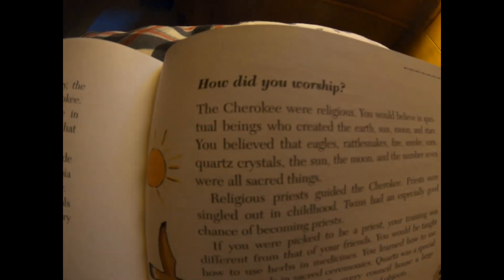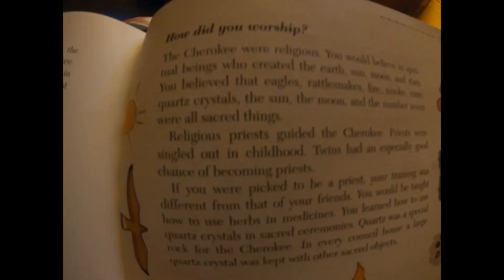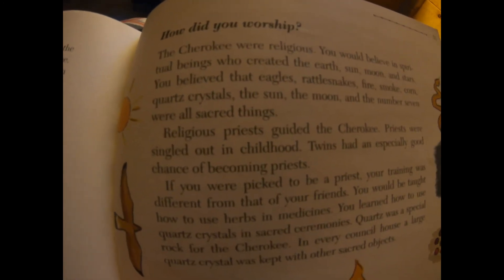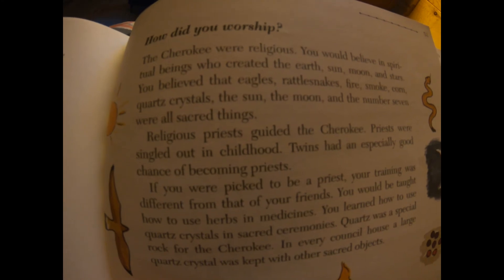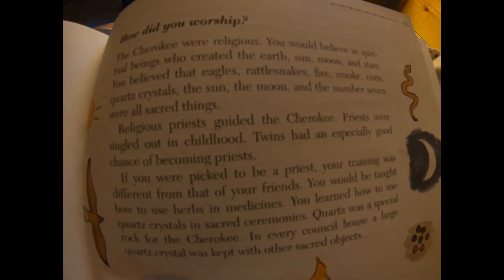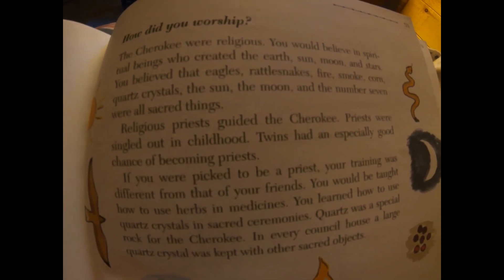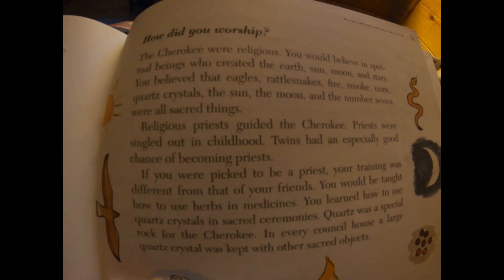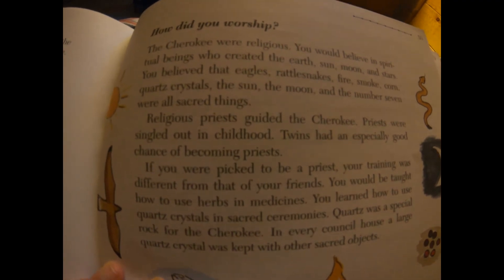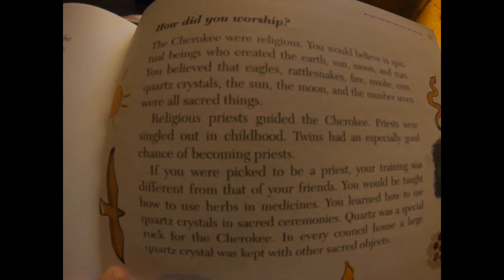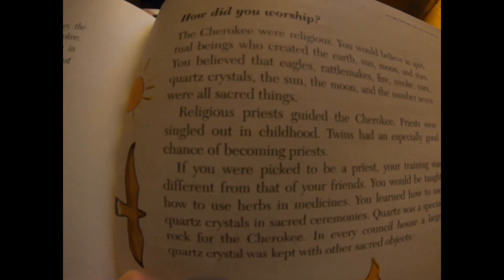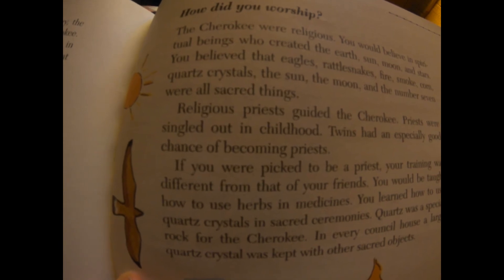How did you worship if you were a Cherokee? The Cherokee were religious. You would believe in spiritual beings who created the earth, the sun, the moon, and the stars. That's right — in some sense, God made those things. He spoke them and they were created.